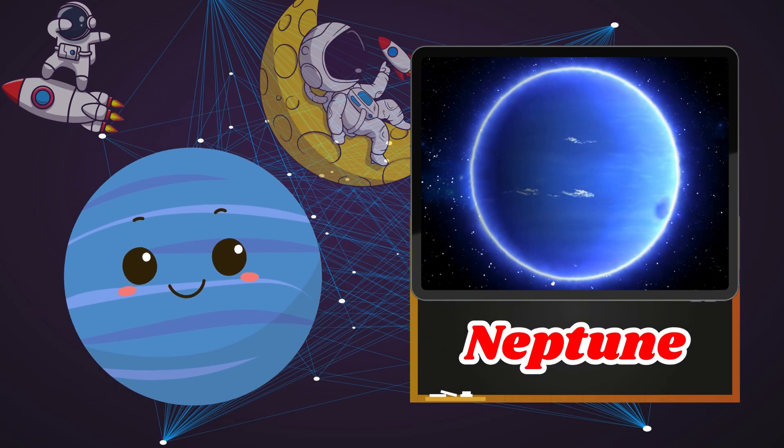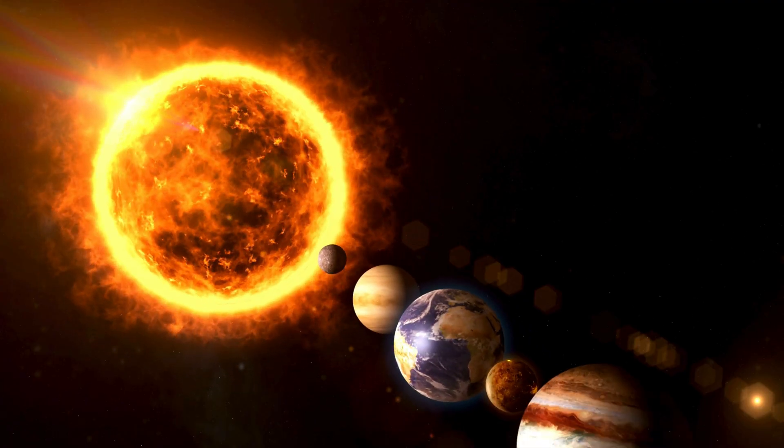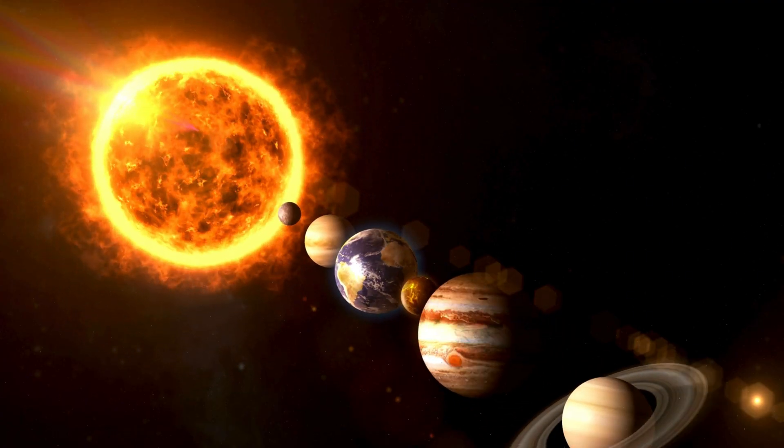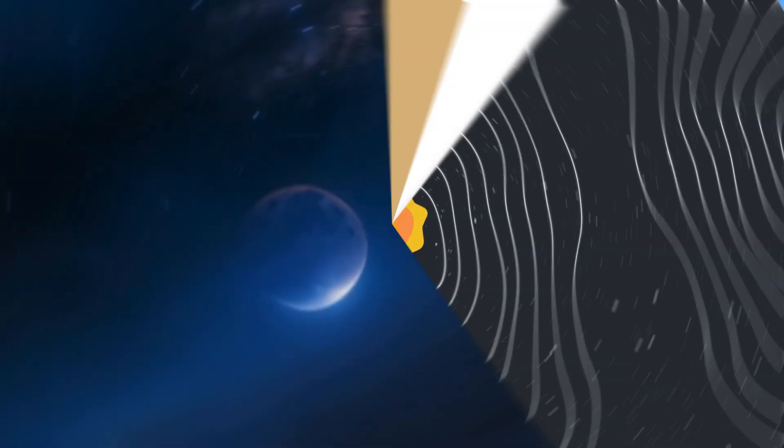Remember kids, the solar system is like a big family, with the Sun as the leader and all the planets, including Earth, as its members. Each planet is unique and has something special to teach us.